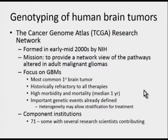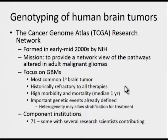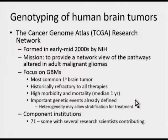Further analysis of human brain tumors was kick-started in the early-to-mid-2000s by the NIH with formation of the Cancer Genome Atlas Research Network (TCGA). The mission was to provide a network view of pathways altered in adult malignant gliomas, focusing primarily on GBMs. GBM is the most common primary brain tumor, historically refractory to all therapies except in methylated cases, with a median one-year survival. It had a number of genetic events defined, though these had not yet yielded druggable targets or prognostic features beyond those already mentioned.